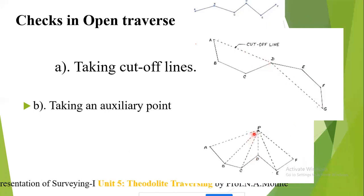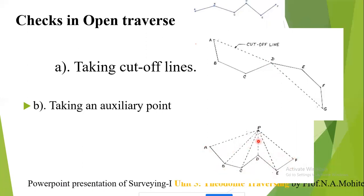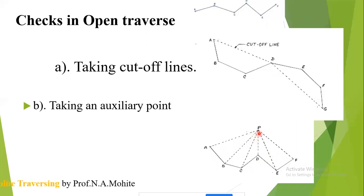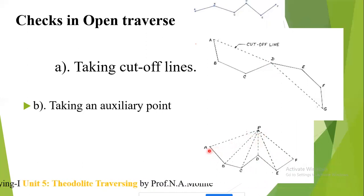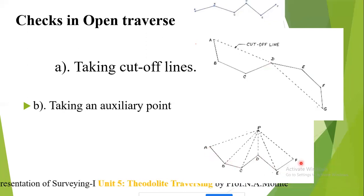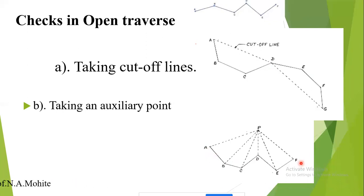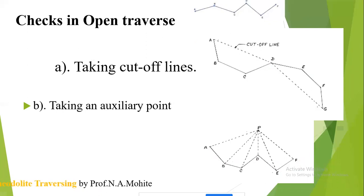The second method for checking an open traverse is by taking an auxiliary point. An auxiliary point P is suitably selected on one side of the open traverse — say A, B, C, D, E, F. The magnetic bearings of all traverse stations to point P are measured. If the traverse has been plotted accurately, all these bearings must meet at point P when plotted from stations A, B, C, D, E, and F.